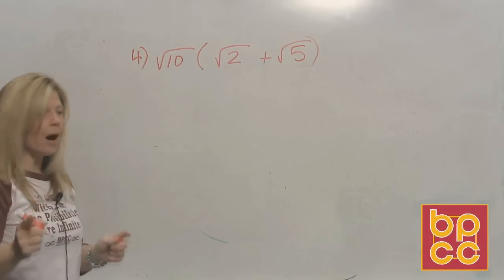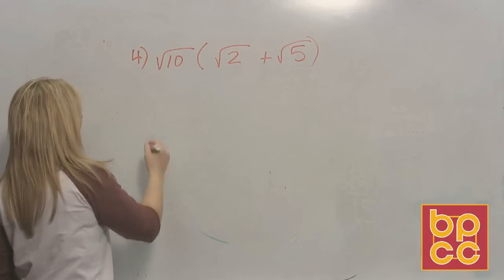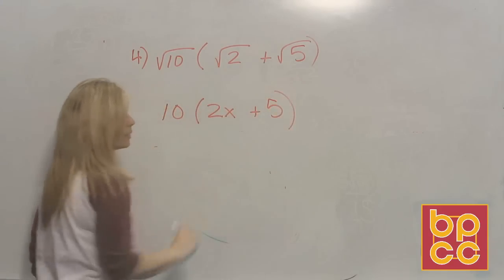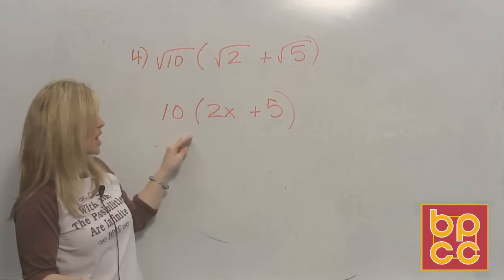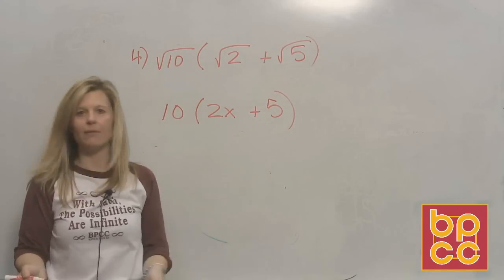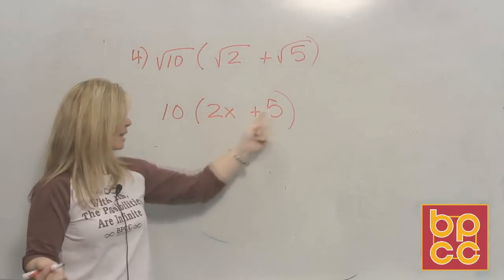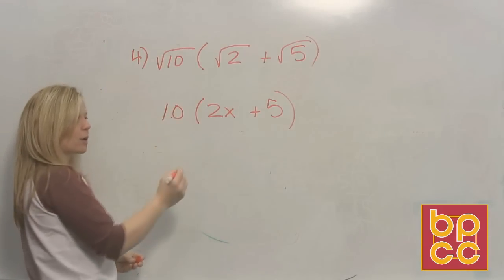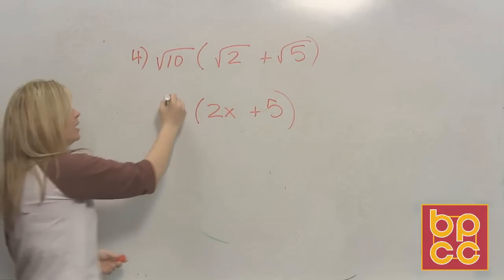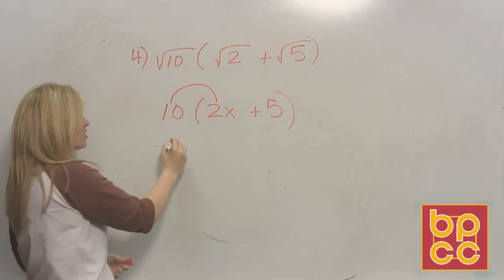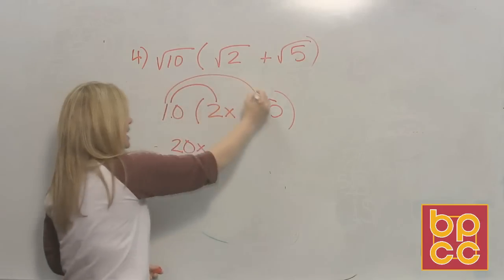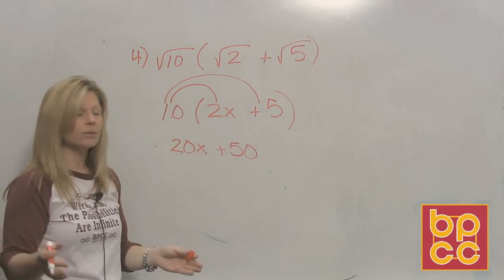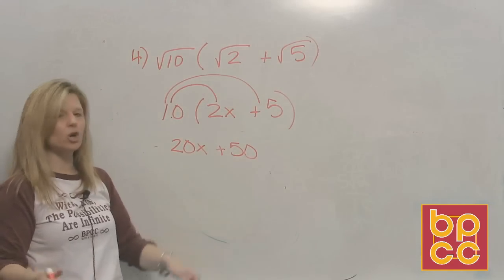Suppose from previous chapters I had asked you to multiply ten times the quantity two x plus five. Can you take two x and add it to five? No — they're not alike. So because we can't do what's inside the parentheses, we take the ten and distribute it. Distribute means to give to all. We multiply ten to the two x and get twenty x; we multiply ten to the five and get positive fifty. That gets rid of the parentheses. We still can't add, because these are not like terms, so we're done.